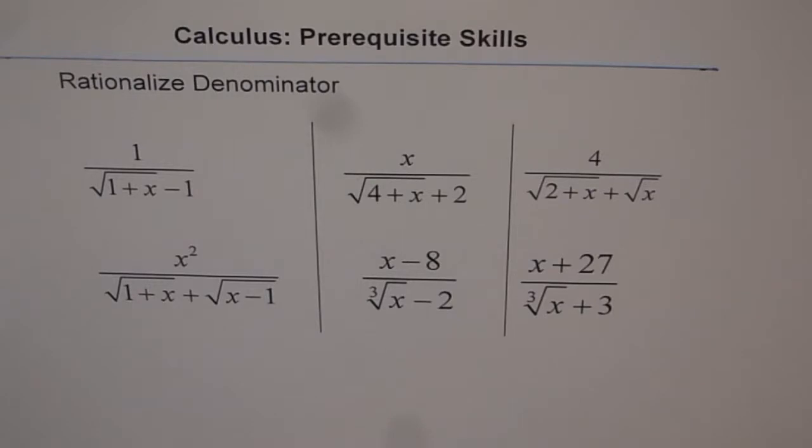So basically when you rationalize, you need to multiply and divide by the conjugate. Now, for example, the very first one.